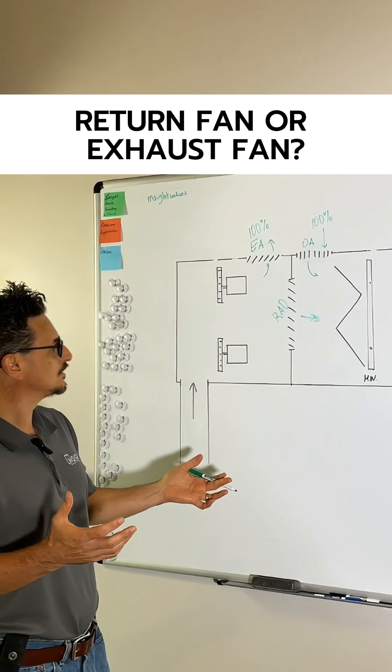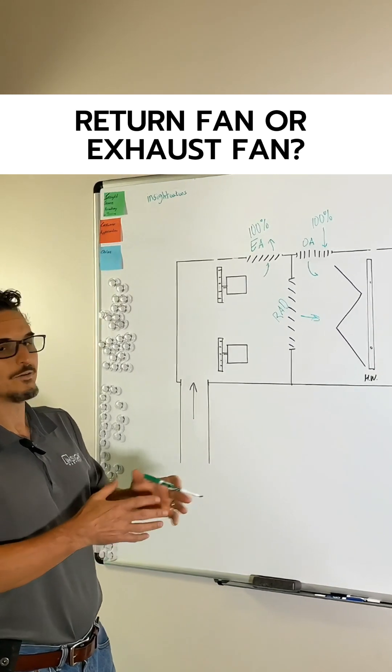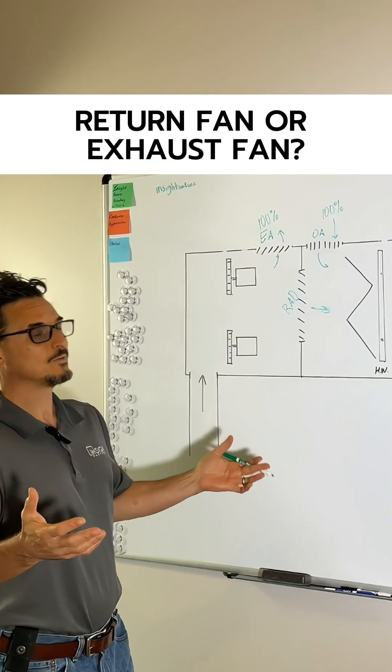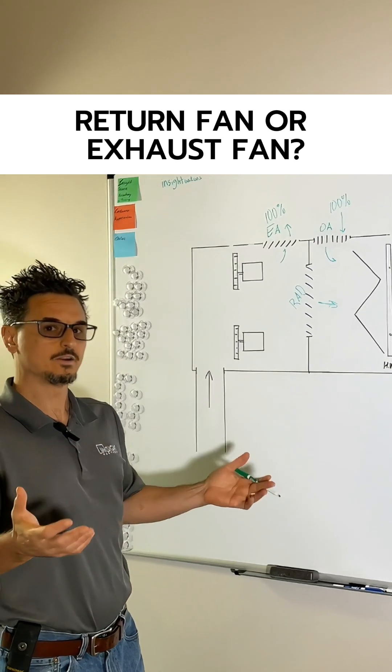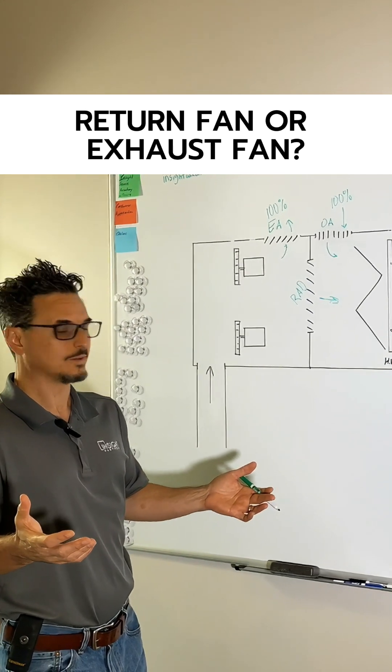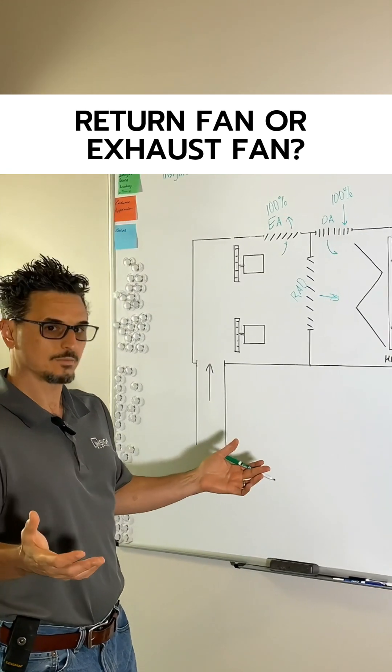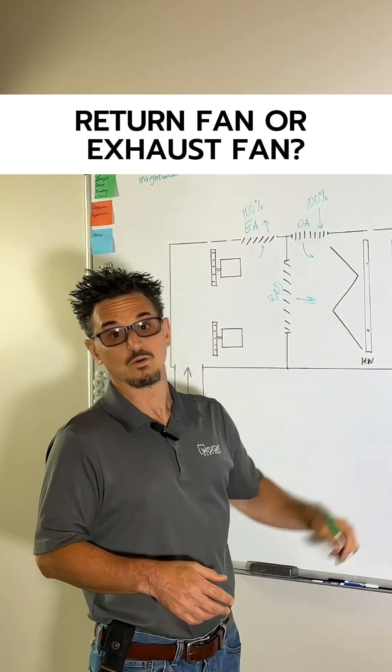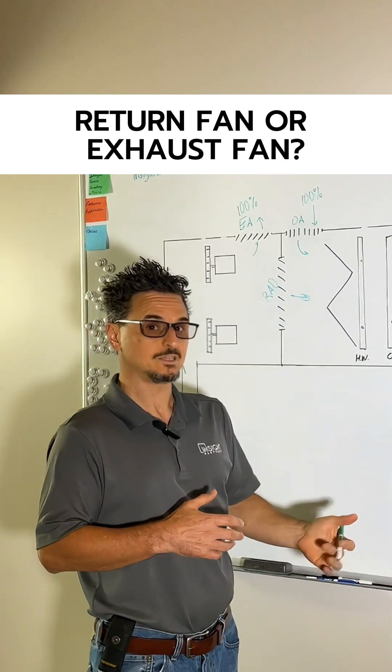The other area you might use it is if you have a large DX unit. We're talking about chill water units here, so large chill water air handlers, over 100 ton DX units. Those are the times I've used these. A lot of static pressure.